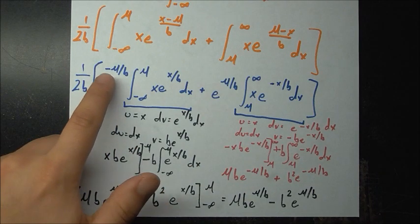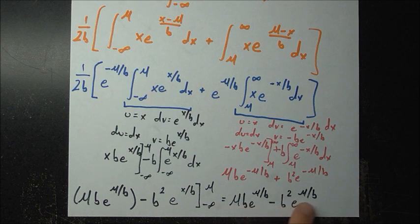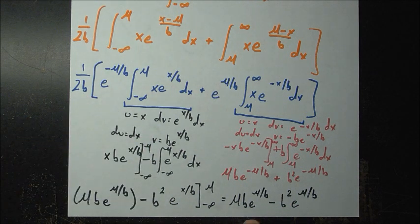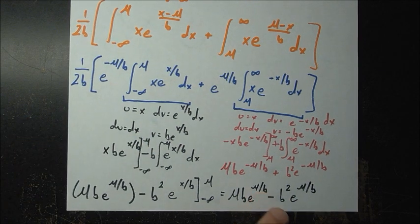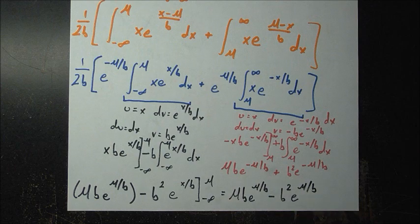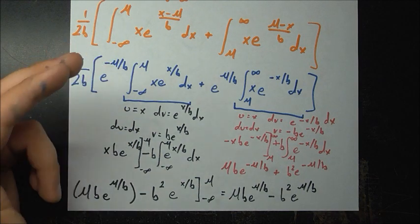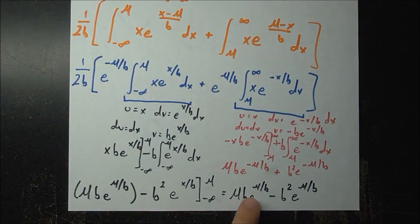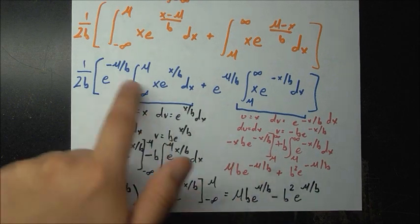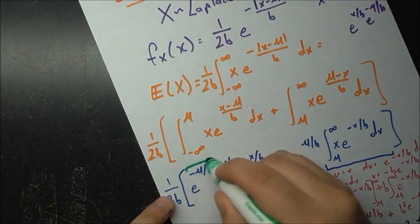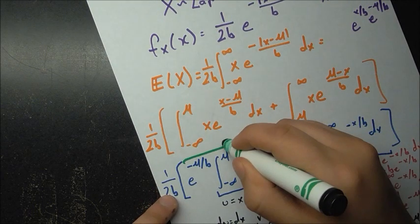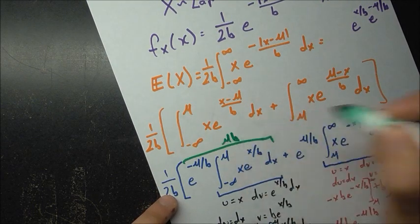We have e to the minus mu over b being applied to the first expression. The e to the mu over b terms cancel with e to the minus mu over b to become one, leaving mu·b minus b squared. So this whole first part is just mu·b minus b squared.